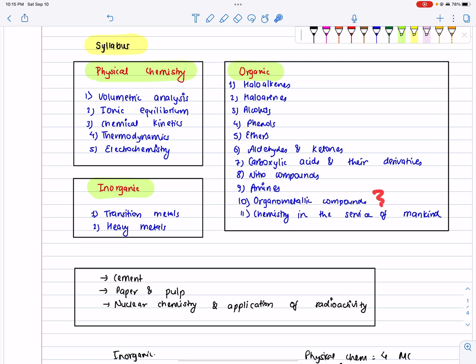We need to solve questions on chemistry in the service of mankind - cement, paper and pulp are very important topics worth 8 marks. In polymers, we use polyvinyl chloride and various polyvinyl compounds.